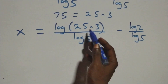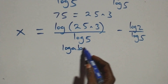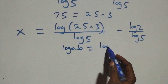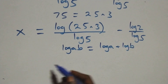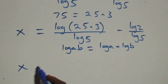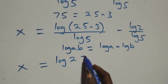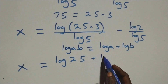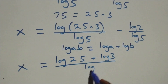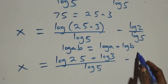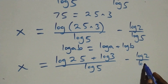This follows the log product rule: when we have log(a times b), this is the same thing as log a plus log b. So we have x equals (log 25 plus log 3) over log 5, minus log 2 over log 5.